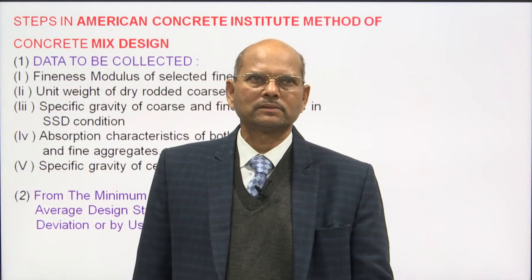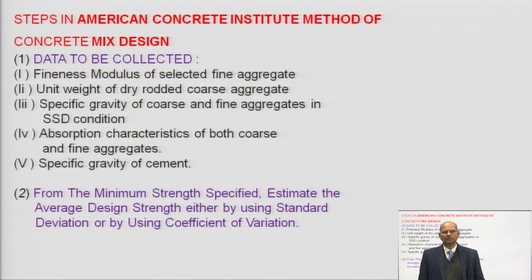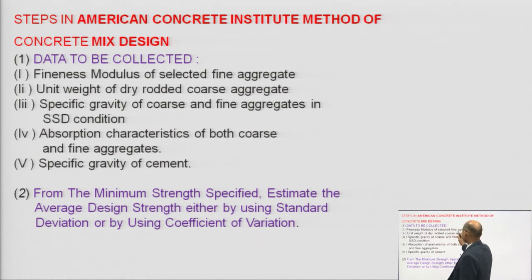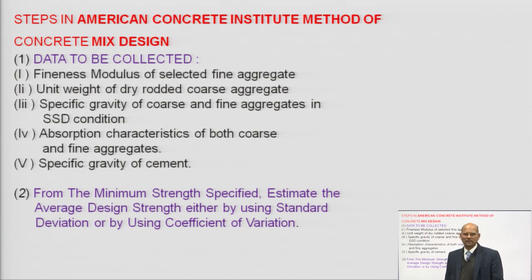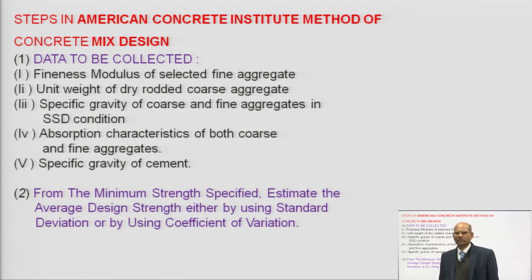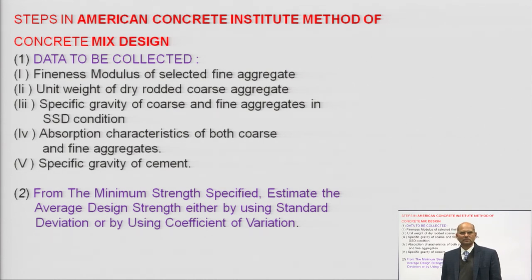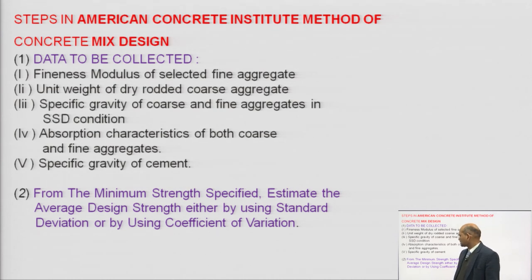In the ACI method, the first step is to collect data. We need the fineness modulus of the selected fine aggregate, and the unit weight of dry rodded coarse aggregate. The maximum size of aggregate depends on the requirement — for RCC work we can select 20 mm and downside aggregate, while for prestressed concrete we may use 12.5 mm downside aggregate.